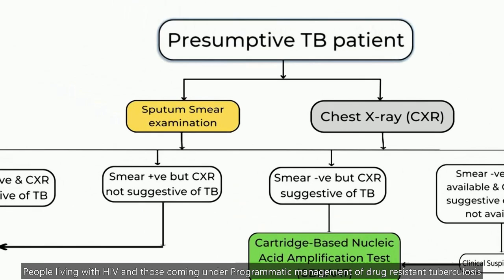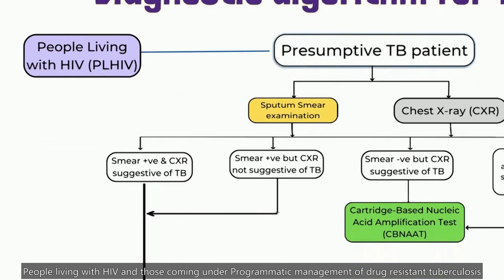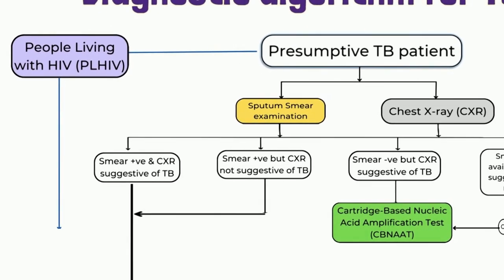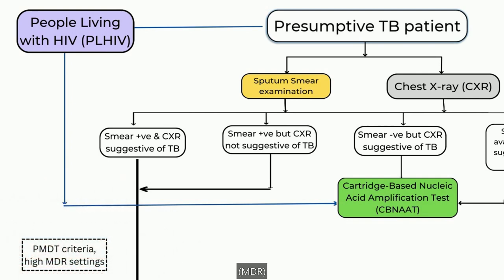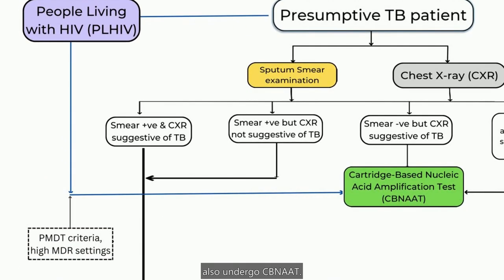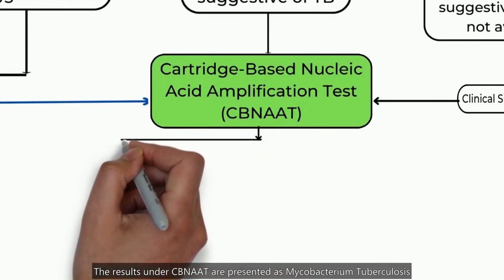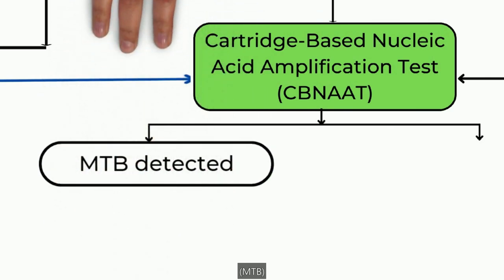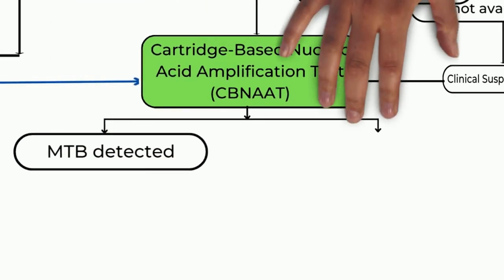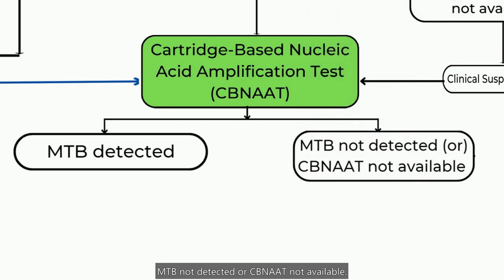People living with HIV and those coming under programmatic management of drug-resistant tuberculosis, PMDT, and high multidrug resistance, MDR, settings also undergo CBNAAT. The results under CBNAAT are presented as mycobacterium tuberculosis, MTB, detected, and MTB not detected or CBNAAT not available.